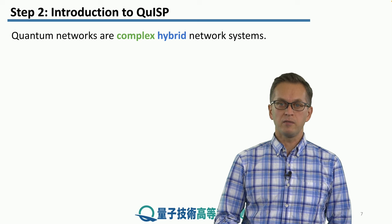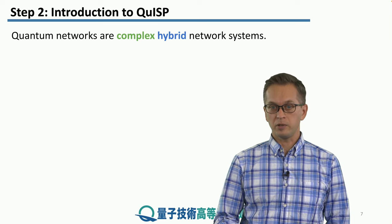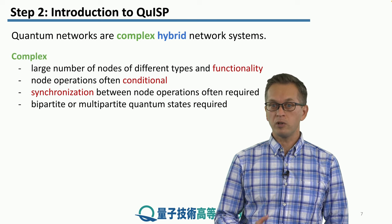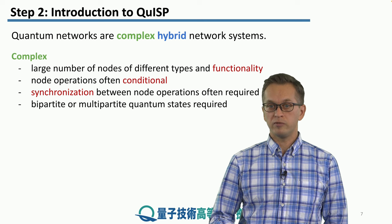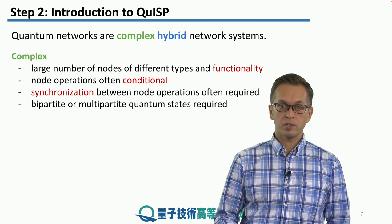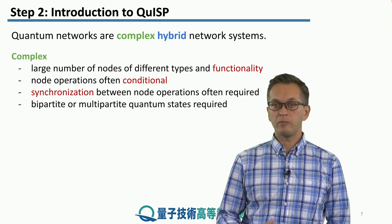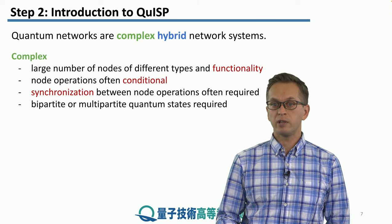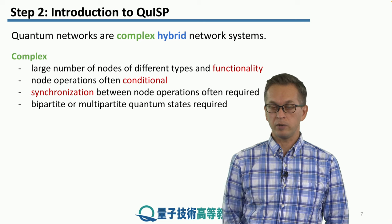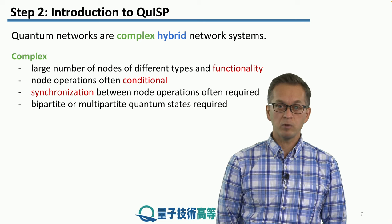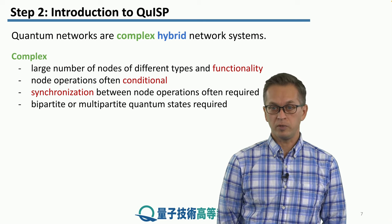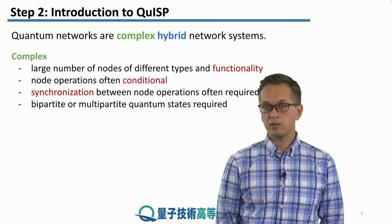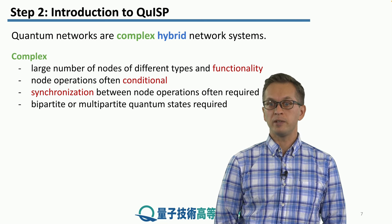Quantum networks are very complex hybrid network systems. They contain a large number of subsystems consisting of nodes of different types and of different functionality. Some nodes can only measure incoming qubits. Some nodes can store them in quantum memories. Some nodes can even operate on them and do other useful operations. Some nodes are designed to route the quantum information in the quantum network, or just in the form of repeaters.